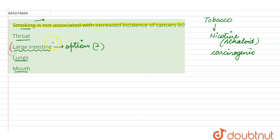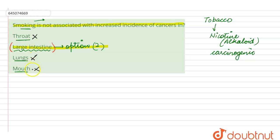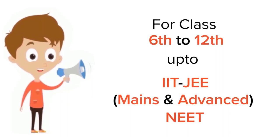So option number two — large intestine — is the right answer for this question. The other options given, which are throat, lungs, and mouth, are wrong options because smoking is associated with the cancer of these three organs. So option two is the right answer.